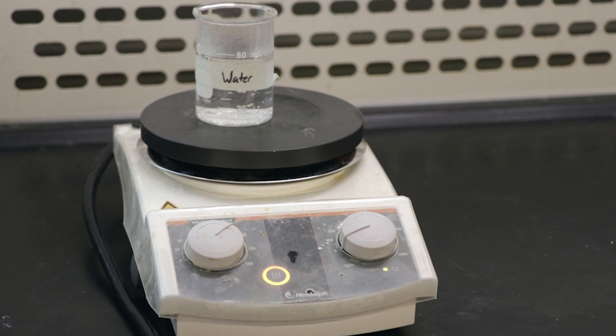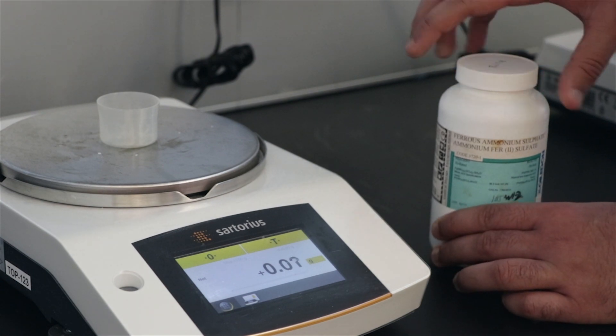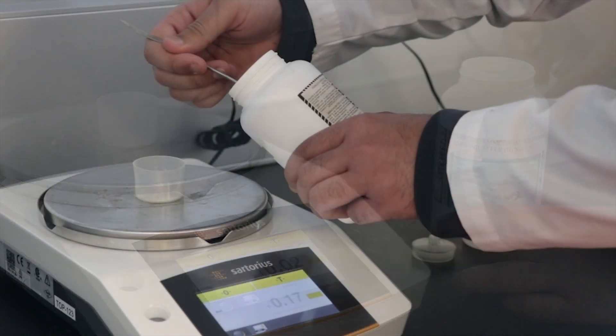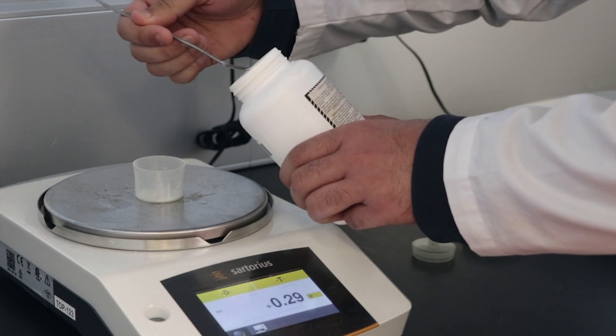First, heat up about 50 ml of water on your hot plate. While your water is heating, go to the top loading balance and tare your weighing bottle. Weigh out approximately 4 grams of ferrous ammonium sulfate. The weight does not have to be exactly 4 grams, but make sure to record the mass you measured.